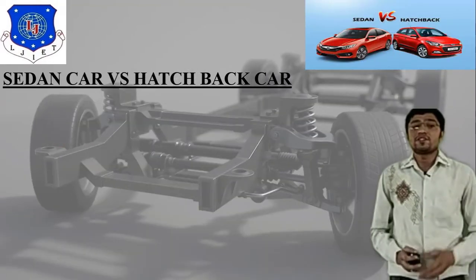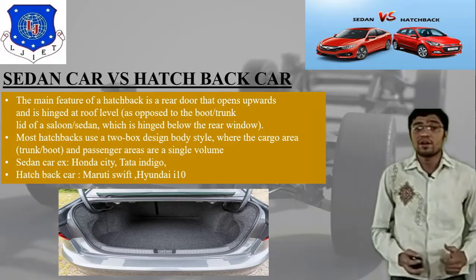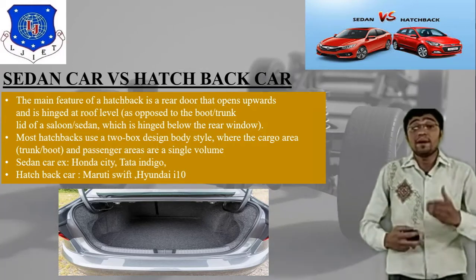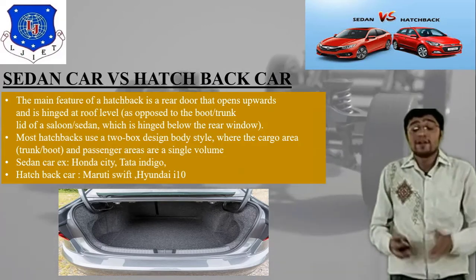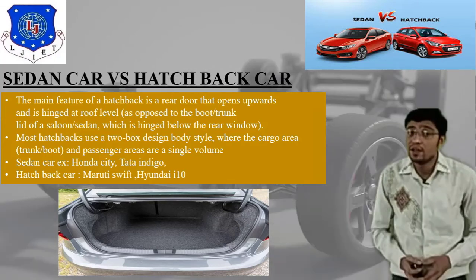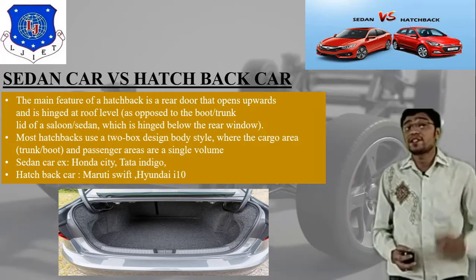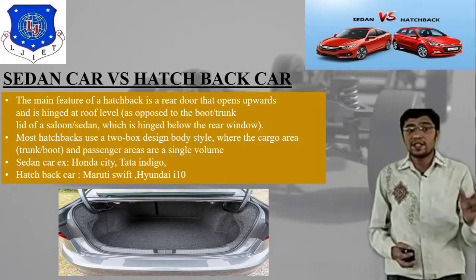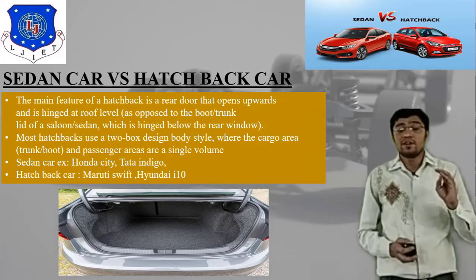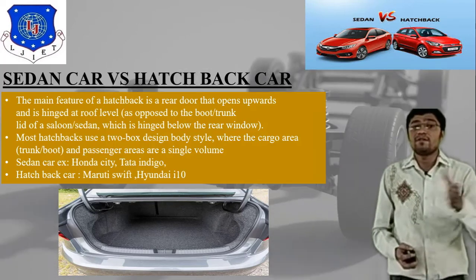Now the difference between sedan and hatchback. Key features of hatchback: a rear door swinging upward for luggage or cargo area access, and it may fold down for second row seating. Most hatchbacks use a two-box design body style where the cargo area and passenger area are a single volume. Sedan examples: Honda City and Tata Indigo. Hatchback examples: Maruti Swift and Hyundai i10.